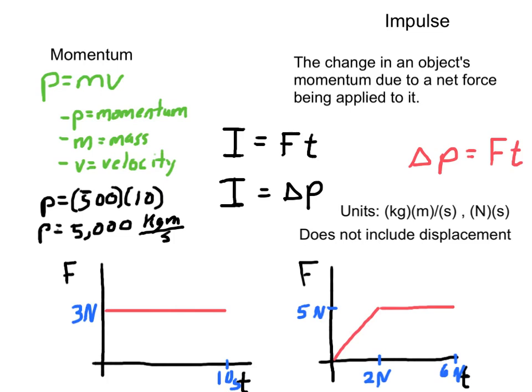So, calculations for momentum. Very plug-chug, very just p equals mv. So, if it just asks, what is the momentum of this object? Just straightforward. No collisions, no time, no anything else. All you have to do is plug-chug through p equals mv. Very, very simple.